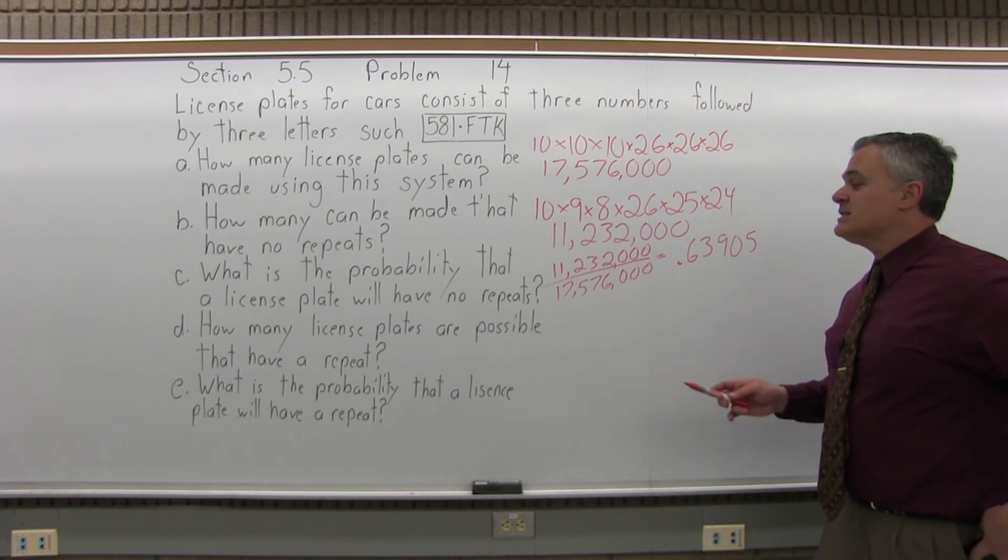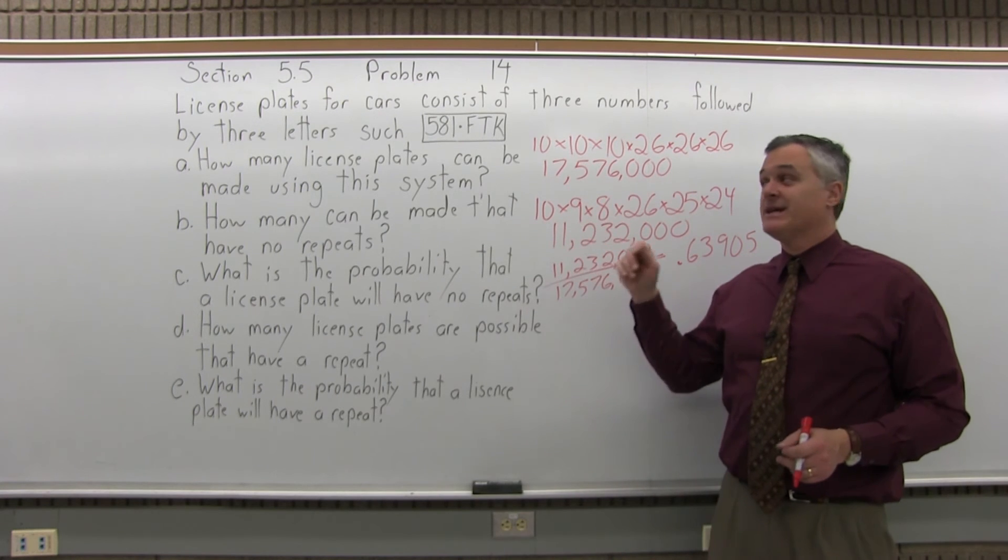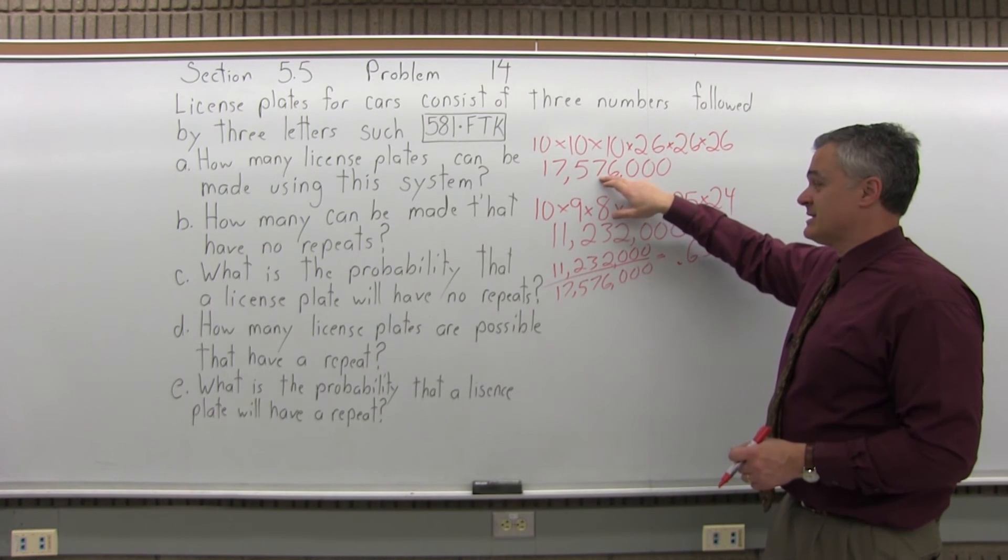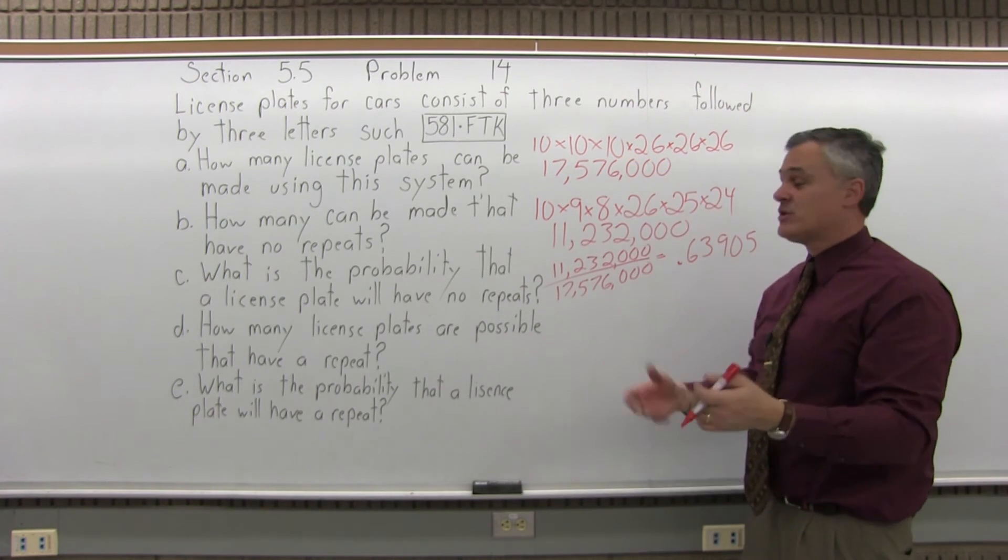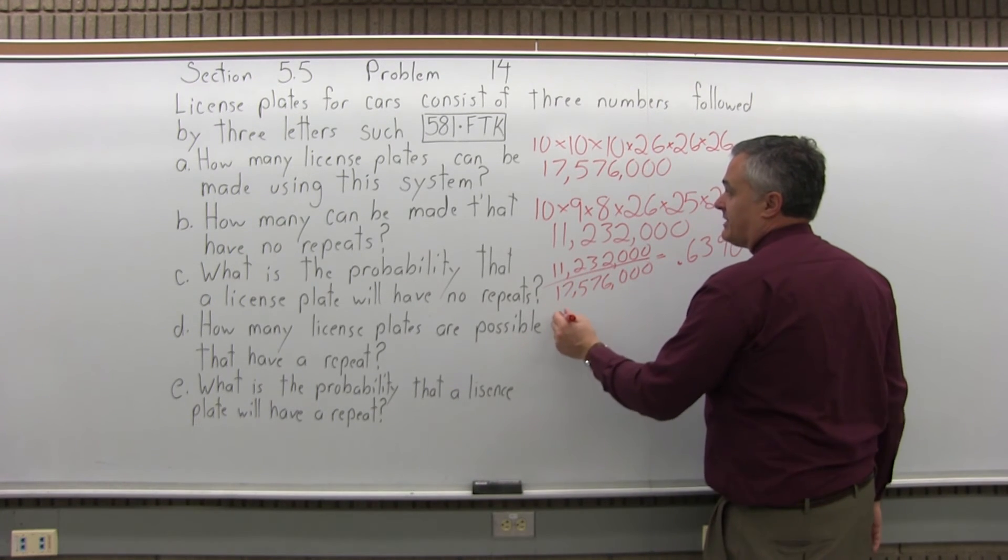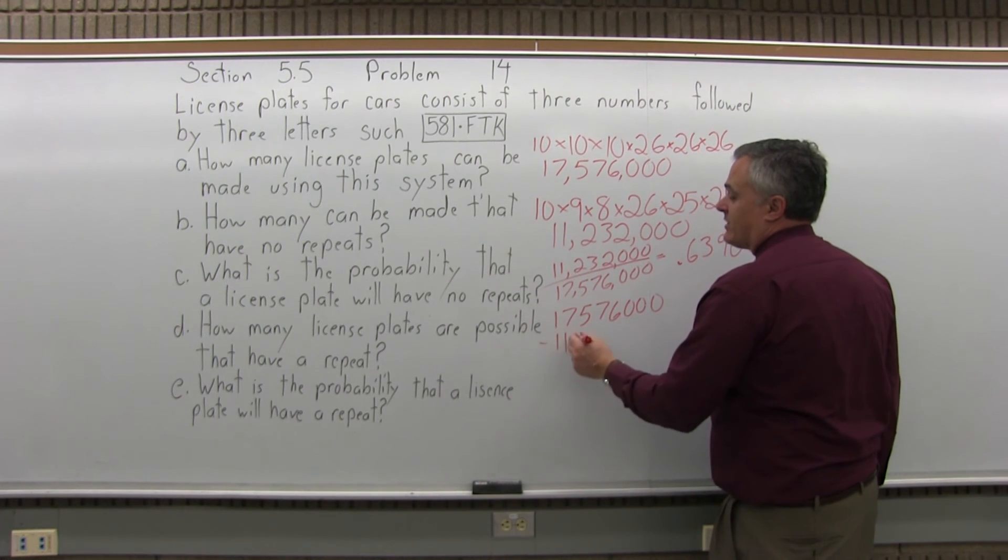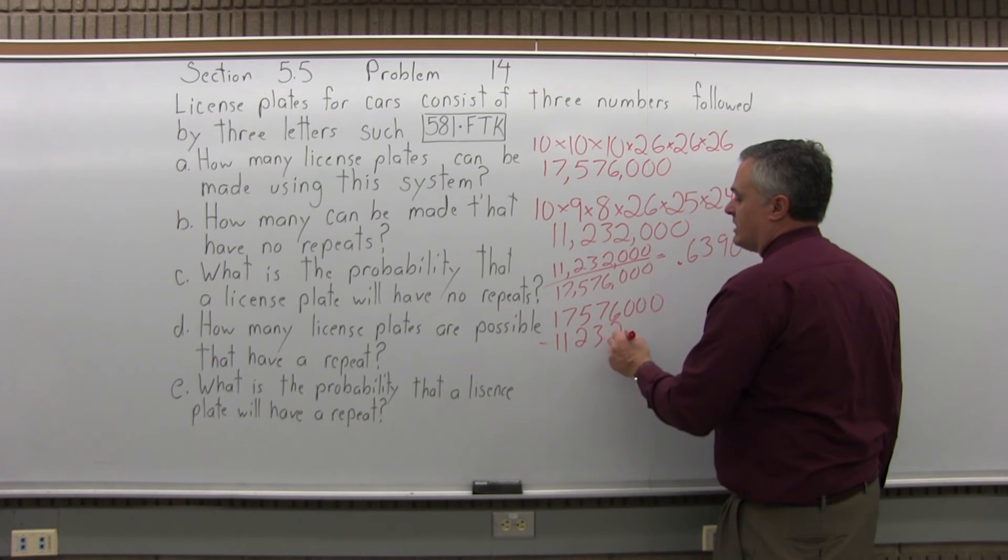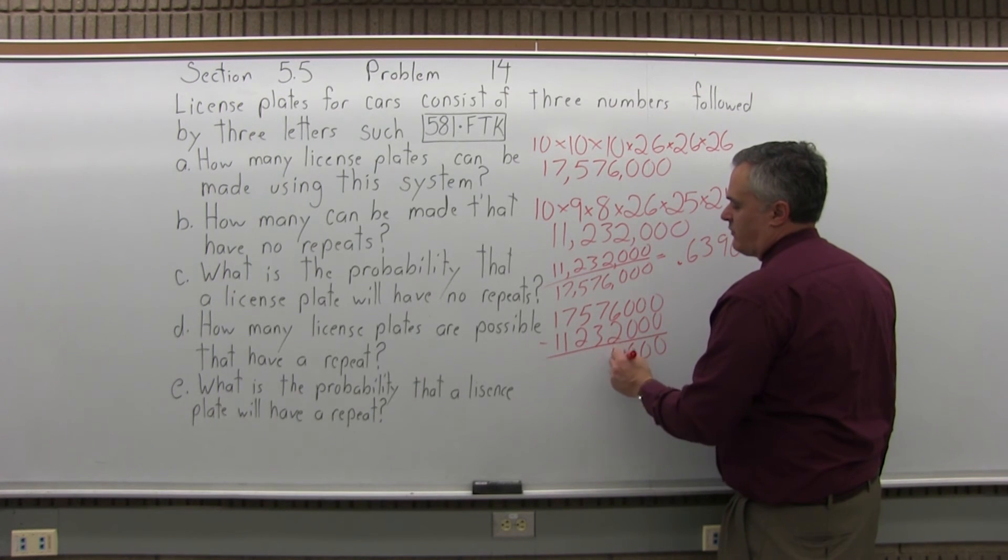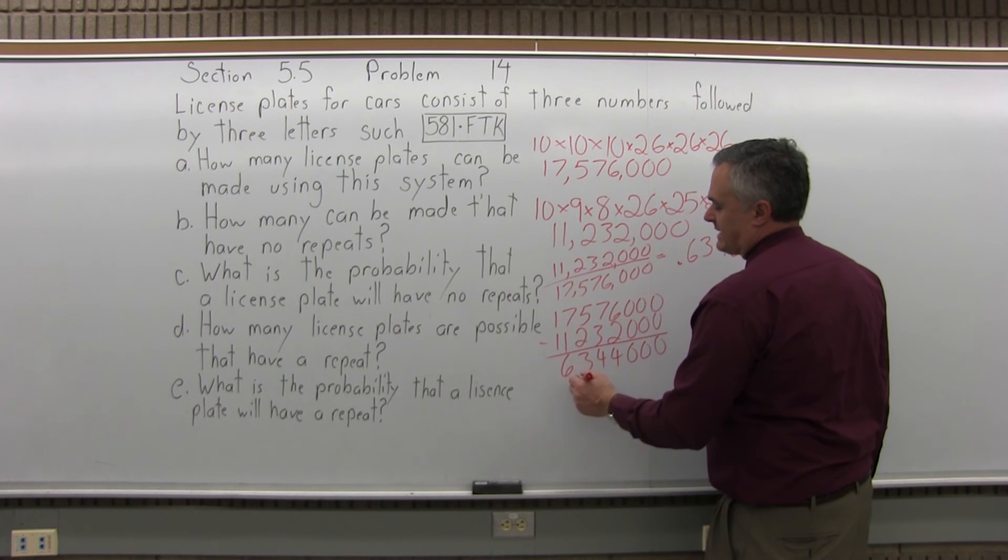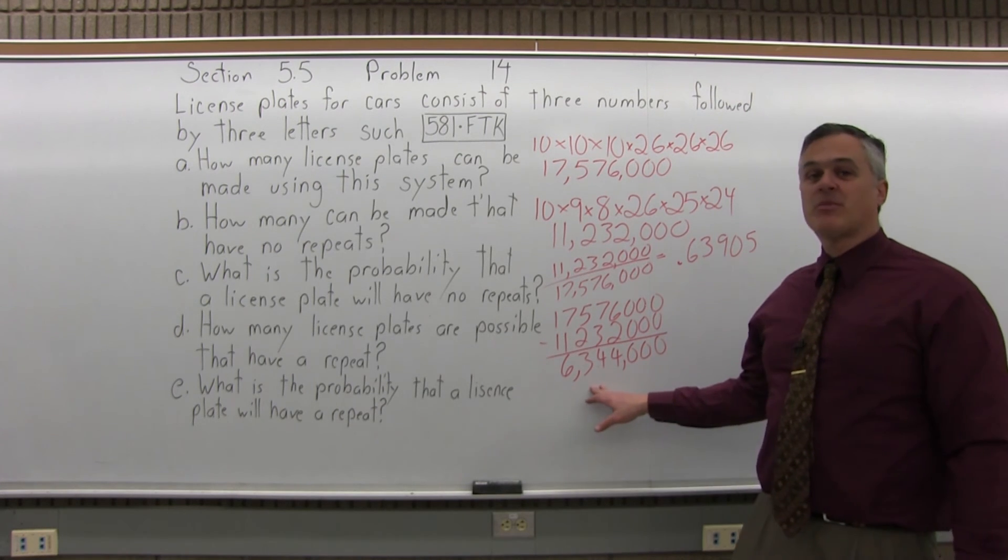Part D, how many license plates are possible that have a repeat? Well, my multiplication principle won't answer that for me, but I know the total number of license plates. I know how many have no repeats, so if I subtract them, the remaining license plates must have some sort of a repeat. For D, how many have a repeat? I'll take the total, 17,576,000, subtract away the number that I can make that would have no repeats, 11,232,000. I'll have 6,344,000 license plates would have some type of a repeat in it.